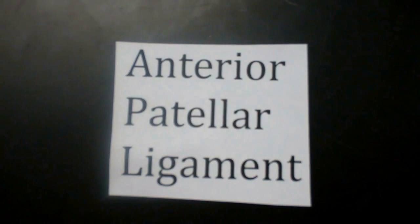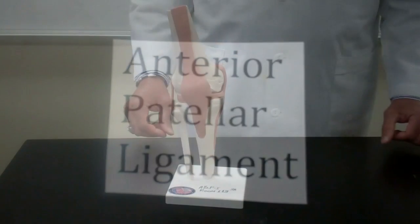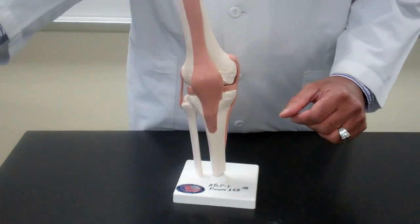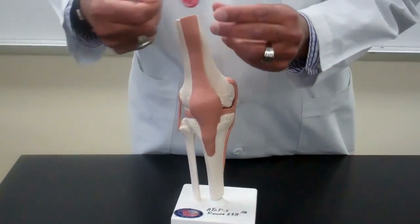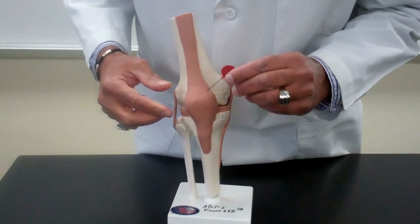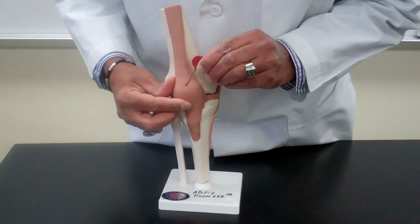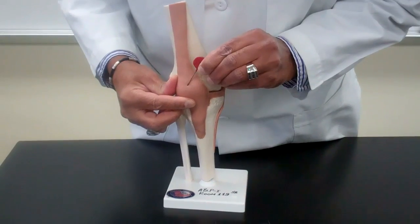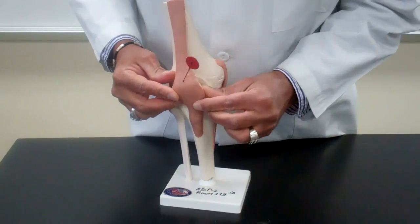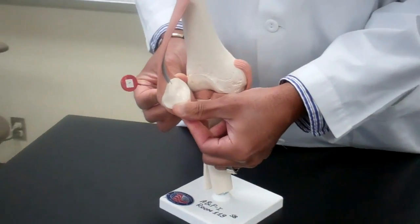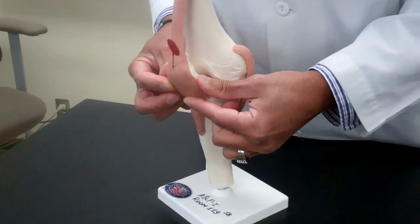Anterior patellar ligament — pin number one. You'll notice that the patella is enclosed in the ligament.